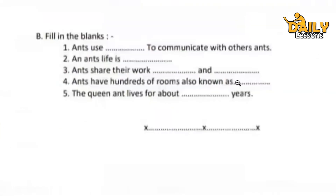Let's move forward. Now there are some fill in the blanks. First: ants use blank to communicate with others. What do ants use to communicate with other ants? Second: an ant's life is blank — what is an ant's life like? Answer in one word. Third: ants share their work blank and blank — how do they share their work? Fourth: ants have hundreds of rooms also known as blank — the hundreds of rooms in ant hills, what are they known as? Give your answer in one word.